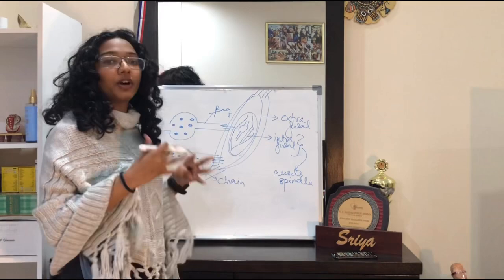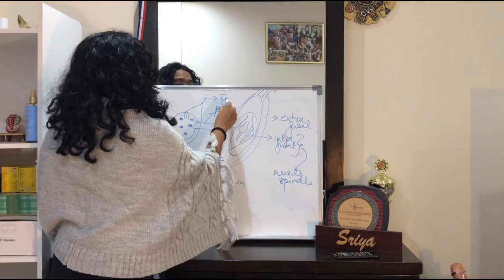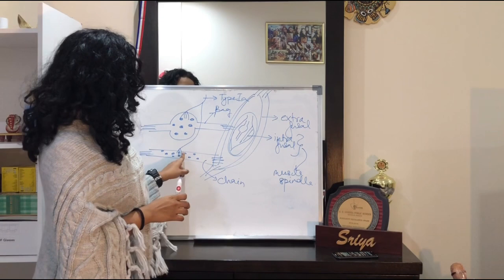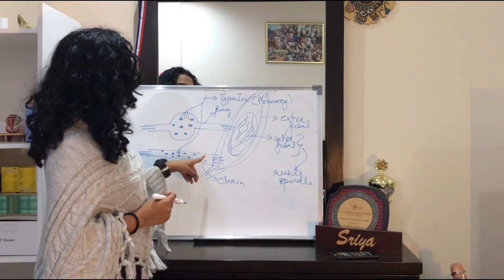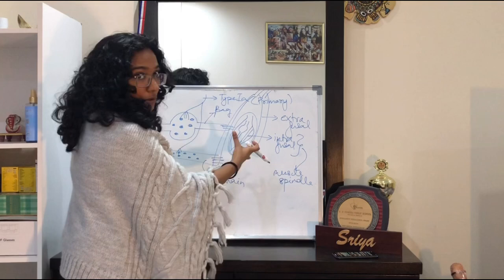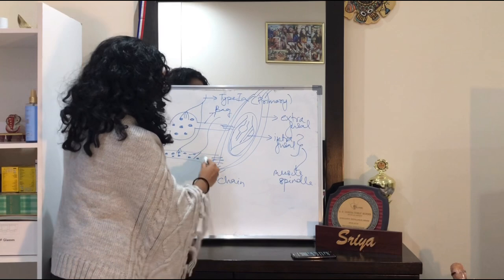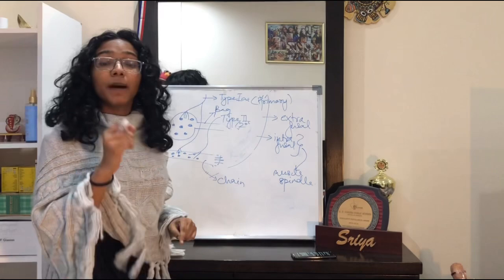The primary sensory fiber is the type 1a sensory fiber, and its endings are known as primary endings or annulospiral endings. Any sensory stimuli from the intrafusal fibers are taken via these type 1a fibers. There is also a secondary afferent — type 2 fibers — which go only to the nuclear chain fibers. The second set of innervation to the intrafusal fibers is by gamma motor neurons, which are motor in nature.